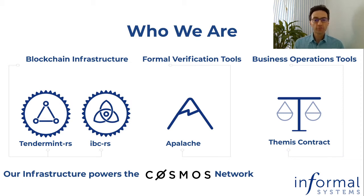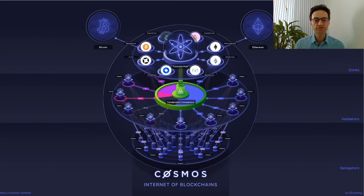Our formal verification portfolio consists of the Apalache Model Checker, one of the leading model checkers for TLA Plus, and we also contribute with the Themis Contract. Our infrastructure powers the Cosmos Network, the dream vision of the next generation internet of blockchains, where each blockchain can operate independently while interacting and trusting each other.